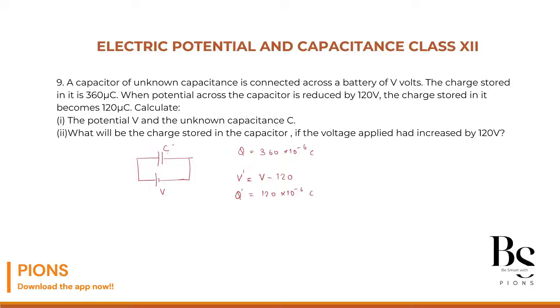Capacitance value doesn't change no matter what you are decreasing the voltage or decreasing the charge. Capacitance doesn't depend on charge and voltage. It is the property of a particular capacitor. So C value remains constant.